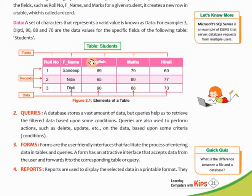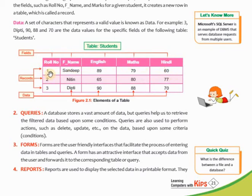What is data? Simply, any word, character, or literal is known as data, which we present to show the records. So individually, 'Sandeep' is a data, 89 is a data, 79 is a data, 60 is a data, 1 is a data. But whenever it combinedly makes information for a particular object, then it becomes a record. So you can also say a record is a collection of data.